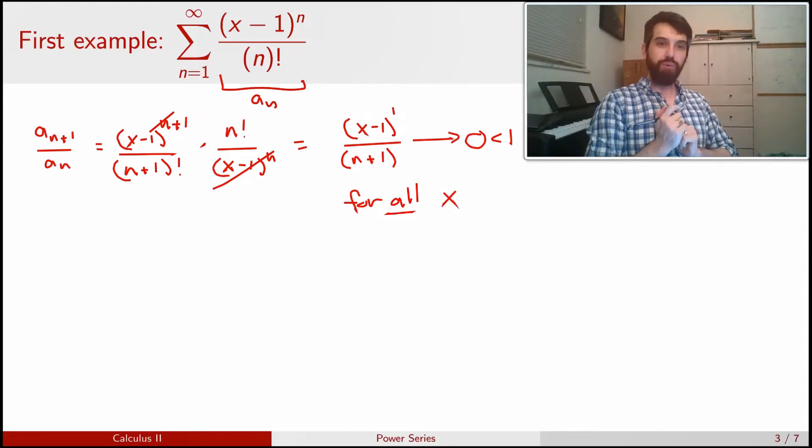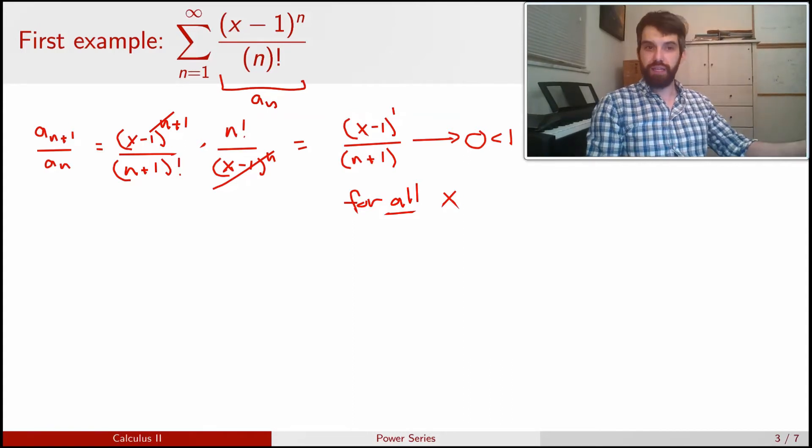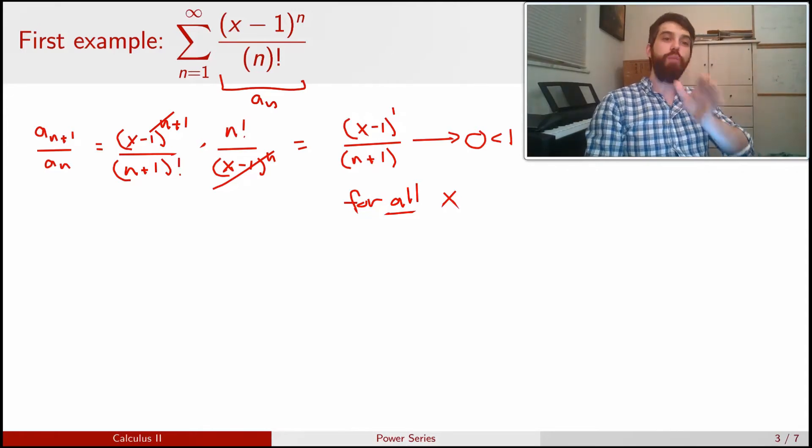And the reason here is no matter what x you choose, suppose you choose a million. Well, if x was equal to a million, yes, you'd have to choose a very large value of n to make this thing small. But we're taking n as it goes to infinity. This is a limit as n goes to infinity. It is going to go to 0 no matter what specific value of x you choose.